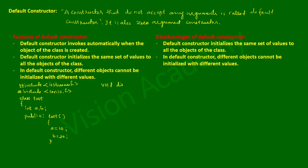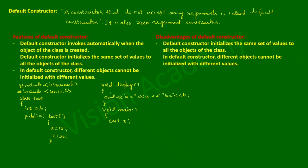Now I'm going to write a user-defined function called display to print the values. I'll write void display, and inside I'll write a cout statement to print the value of both a and b — printing 'a =' followed by the value of a, and 'b =' followed by the value of b. Then in the main function, I'll create an object of this class: test t, where t is an object of type test.